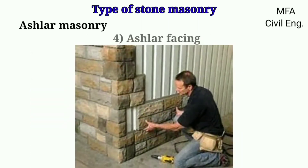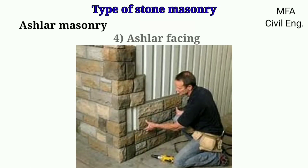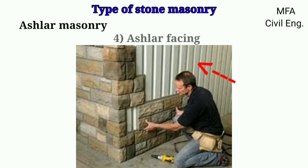In ashlar facing masonry, as ashlar is the best grade of masonry and is very expensive, to achieve economy as well as the appearance of ashlar masonry, only the exposed face of the wall is constructed of ashlar masonry, whereas the backing of the wall is in brick masonry. The backing may be brick masonry or rubble masonry.